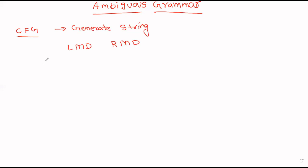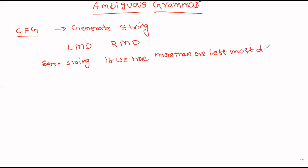For example, for a given grammar and for a same string, if we have more than one leftmost derivation, that grammar is called ambiguous grammar. Or for the given string, if you have more than one rightmost derivation, then that is also called an ambiguous grammar.